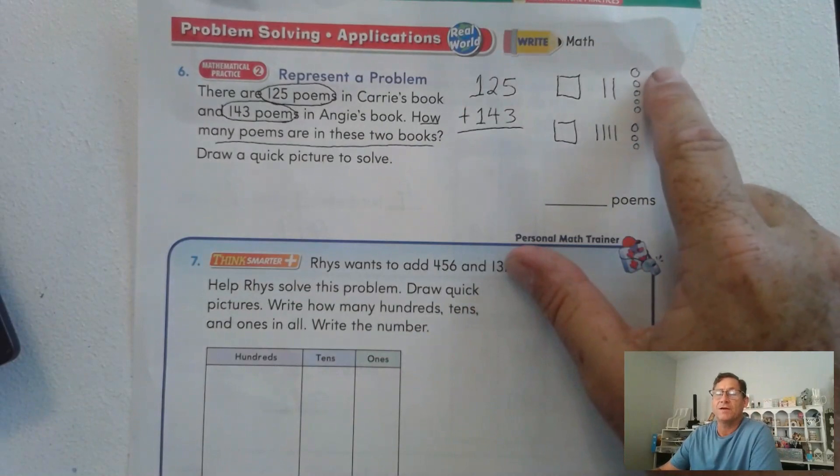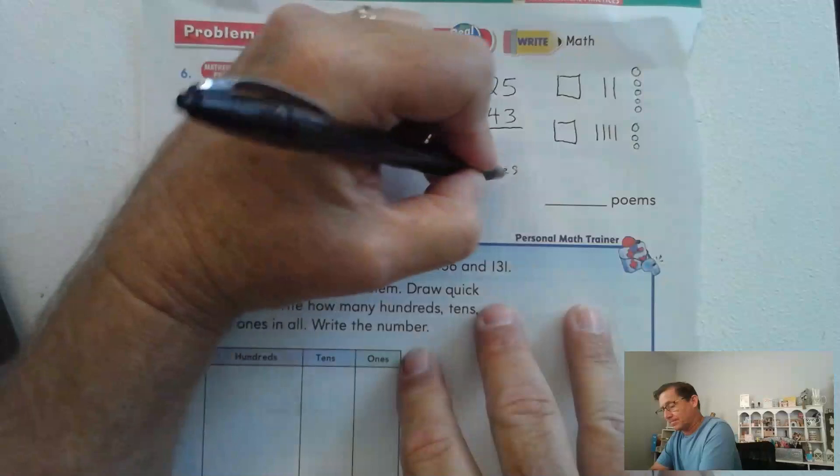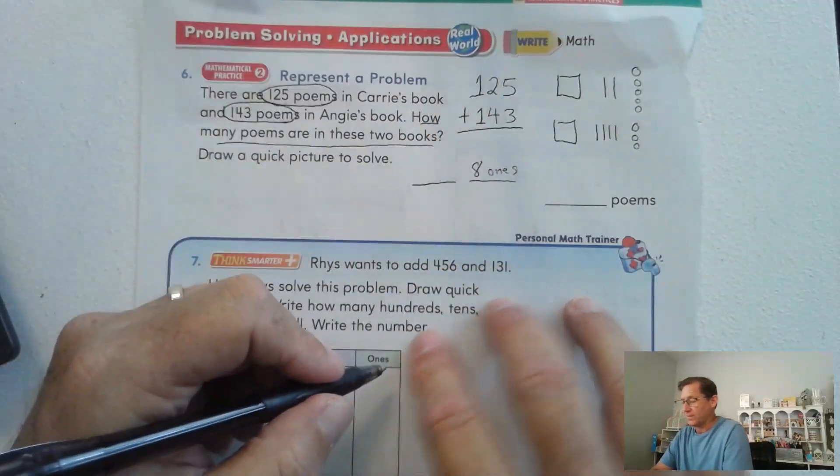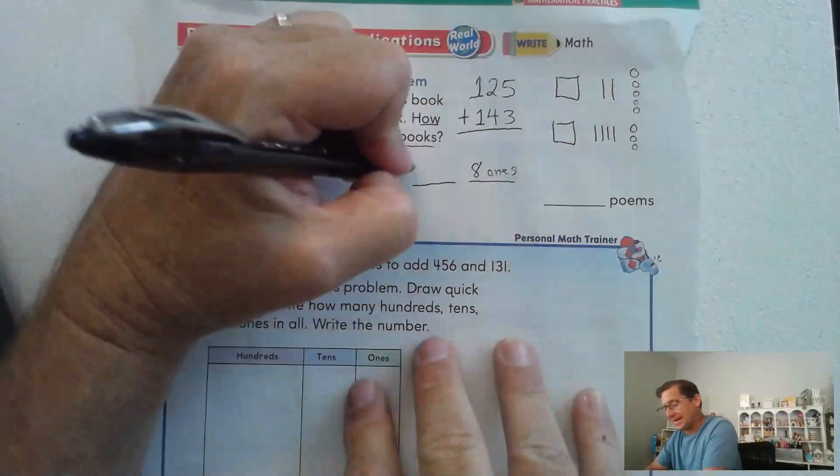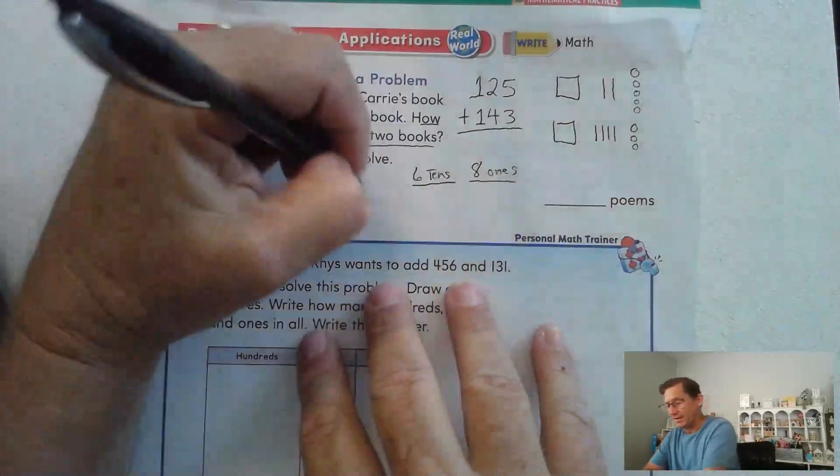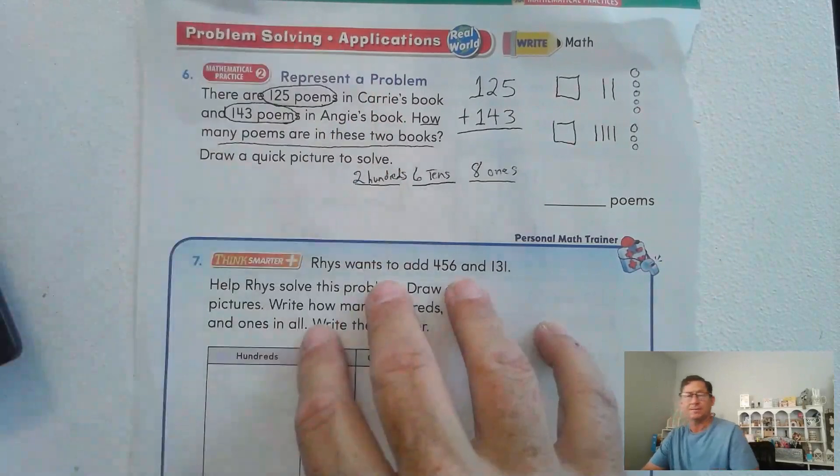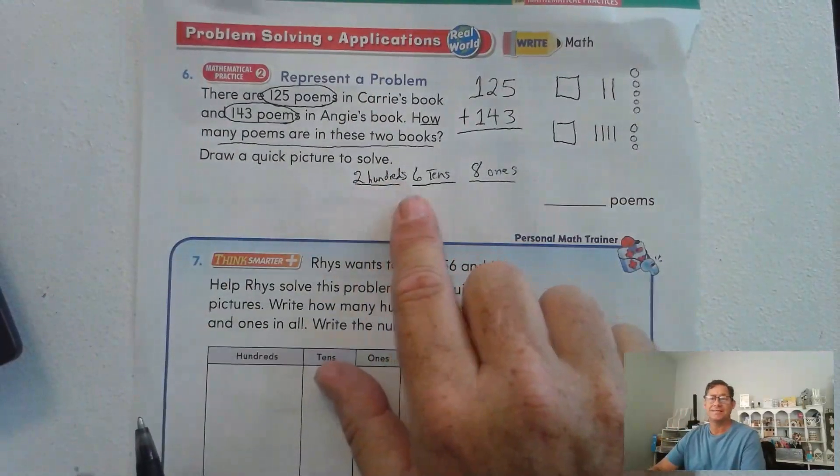So how many ones do we have? We have two, four, six, eight ones. How many tens do we have? We have two, four, six tens. And how many hundreds? We have two hundreds. So we have 268.